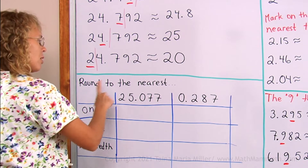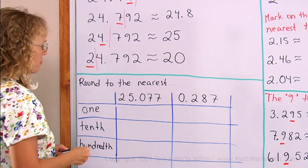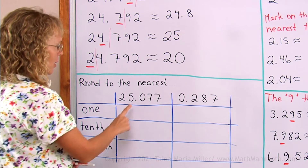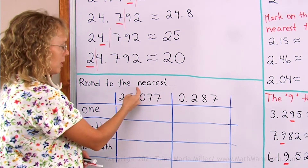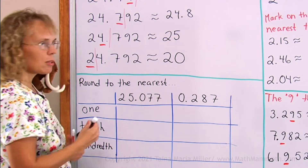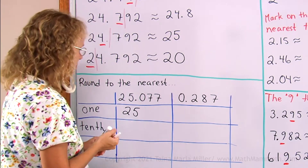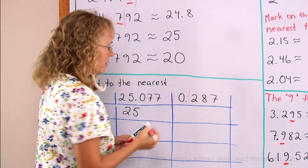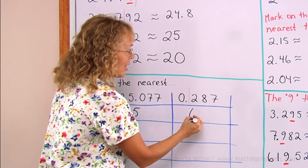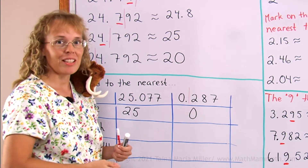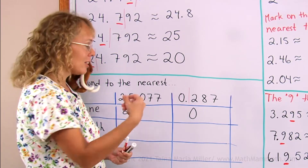Let's look at some other examples. Round to the nearest one, tenth, and hundredth — these two numbers. If I round this to the nearest one, I put my line here: 0 means I round down, so this does not change — it's just going to be 25. Now this number, if I round to the nearest one, I put my line here and 2 means that I round down, so I get 0. It is definitely possible that you round something and get 0 — is it nearer 1 or 0? It is nearer 0.